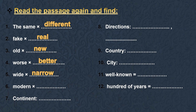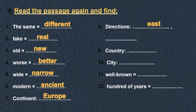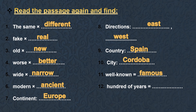Modern — ancient. A continent from the text: Europe. Two directions: east and west — they meet in Al-Andalus a long time ago. Country: Spain. City: Cordoba. A synonym for well-known: famous. Hundreds of years: centuries. Check your answers and make sure you write the questions and fill all the spaces correctly without any mistakes.